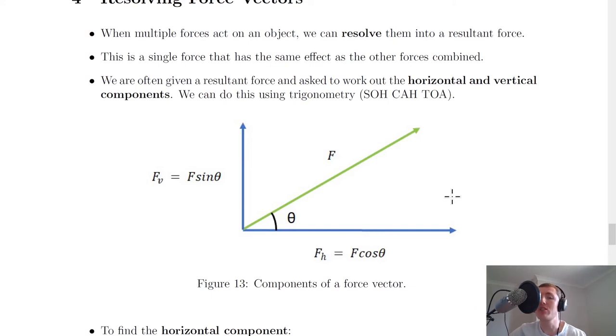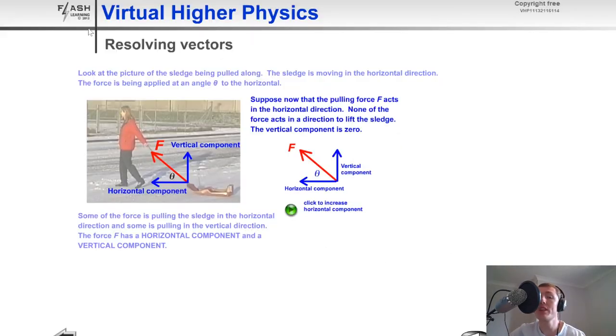I'll show you a quick simulation to visualize this. If I click here, you'll see that the horizontal component increases as the resultant force vector moves towards it. Notice that the vertical component becomes zero because we're now lying completely along the horizontal.